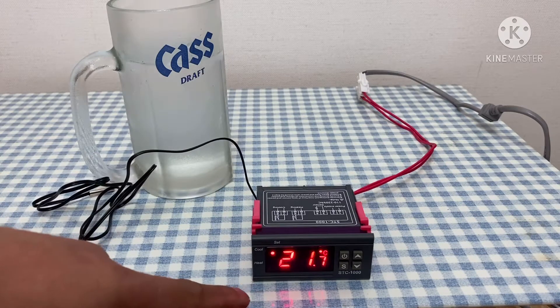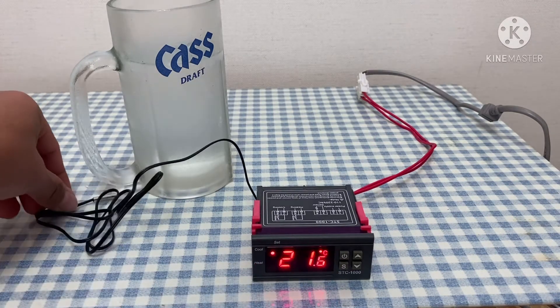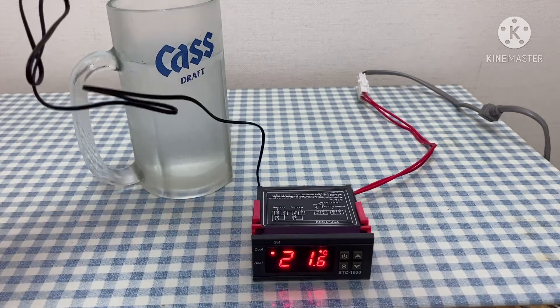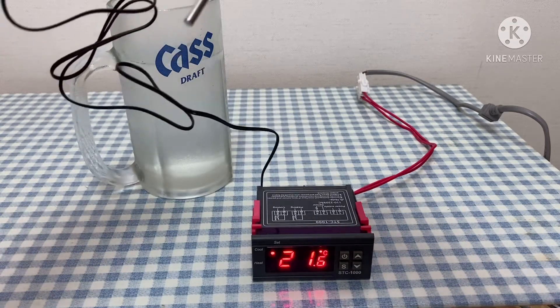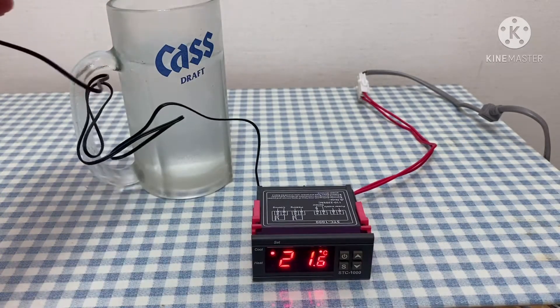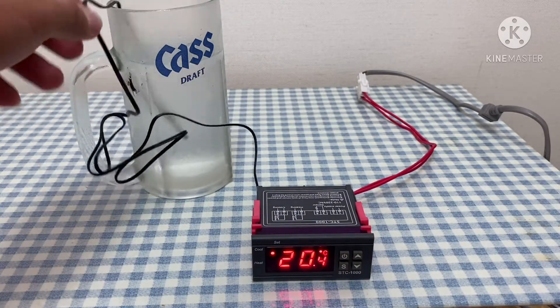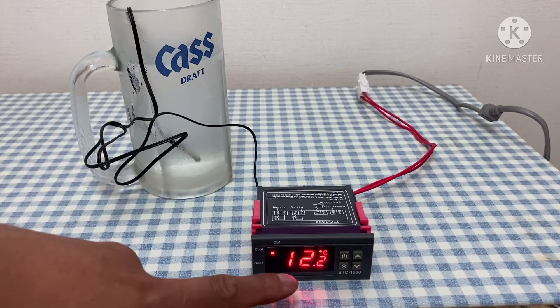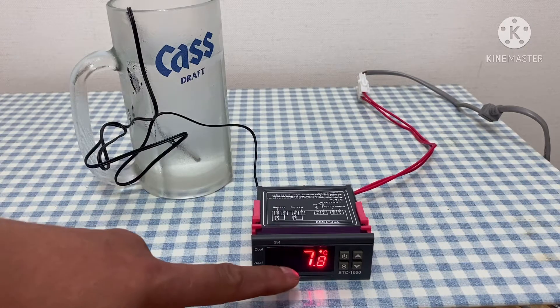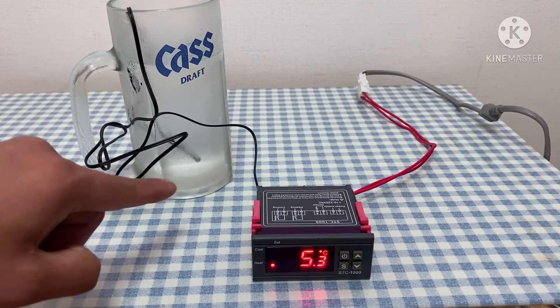The initial reading now shows the temperature is 21.7 degrees. What we are looking for is zero degrees Celsius, so let's dip this sensor into this ice cold water. See what happens—the temperature is abruptly decreasing. What we are looking for is zero degrees Celsius.